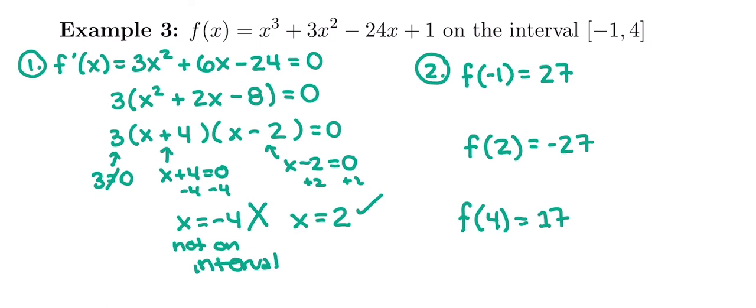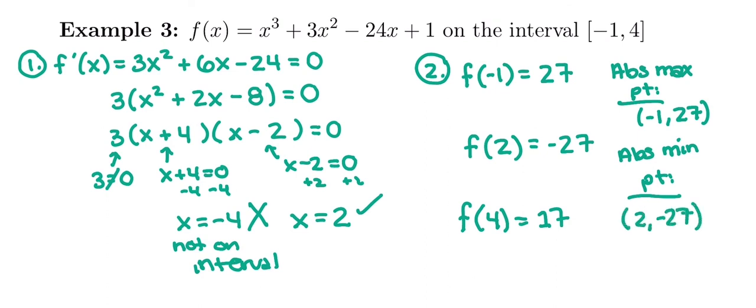So now I'm going to look at these y values and figure out what's the absolute max point and what's the absolute min point. So we're just comparing y values between 27, negative 27, and 17. Which one is the absolute max? Well, the absolute max would be negative 1 comma 27, or if we're just asked for a value, the y value would be just 27. And the absolute min point would be at 2 comma negative 27. So again, all we've really done here is zoom in on part of the graph and say what's the highest y value and what's the lowest y value to give the absolute max and the absolute min.